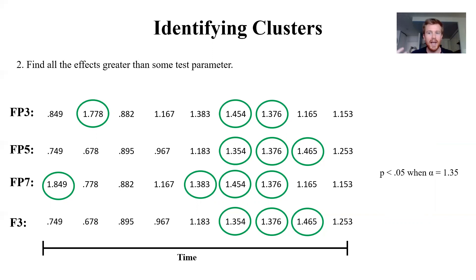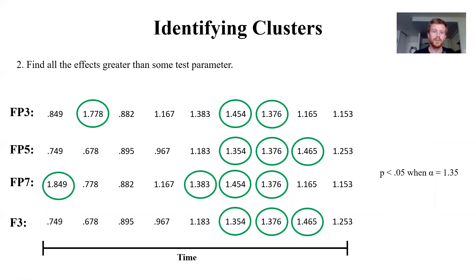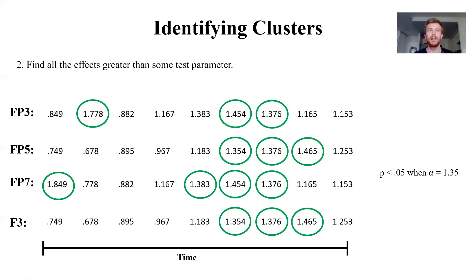We use some test parameter — say a p-value of 0.05, which corresponds to a t-value of 1.35 in this example — and take any effect that's significant based on that value to identify clusters in the data. You can see that the green circles mark points in time and space where the effect exceeded the test parameter. Some differences are erratic, appearing at one time point or one location then disappearing, but other clusters emerge across time and neighboring points in space. We use parameters such as a cluster must last longer than three samples or include a minimum of three channels to identify valid clusters.